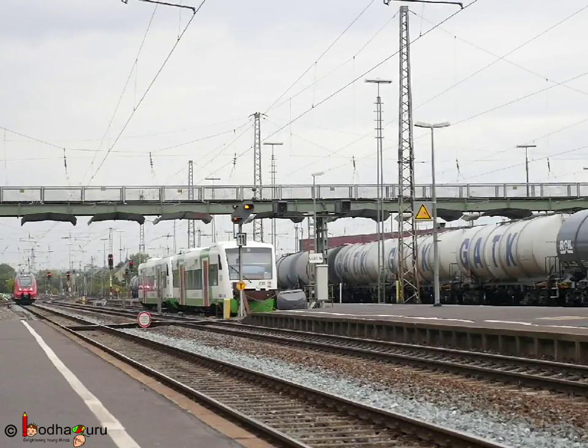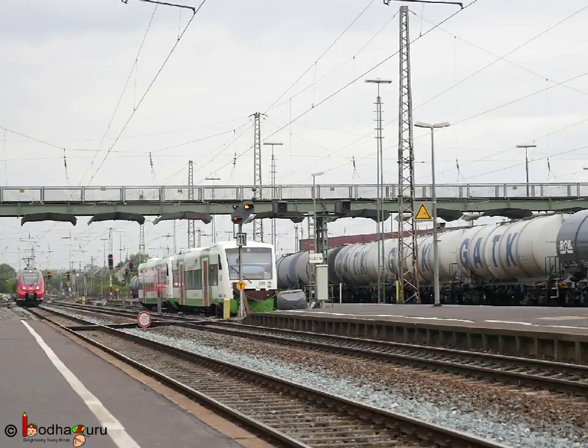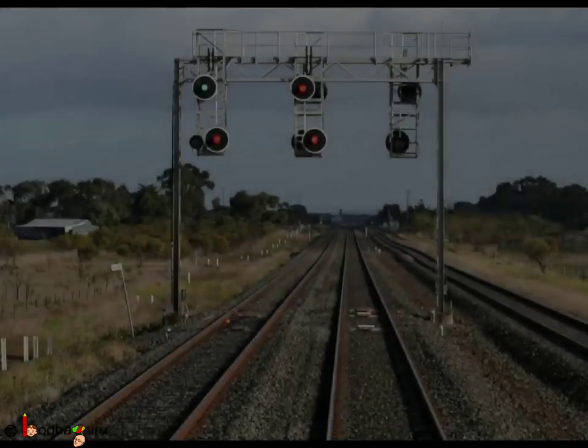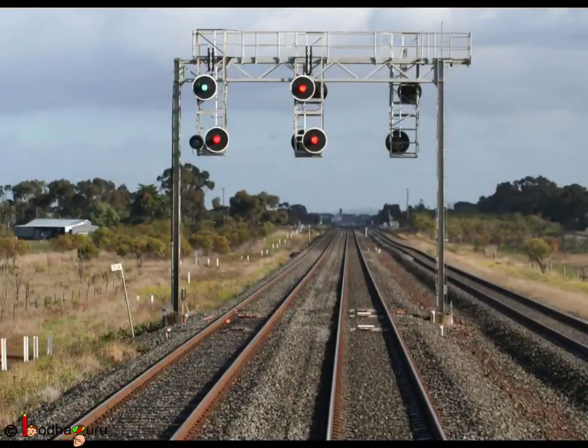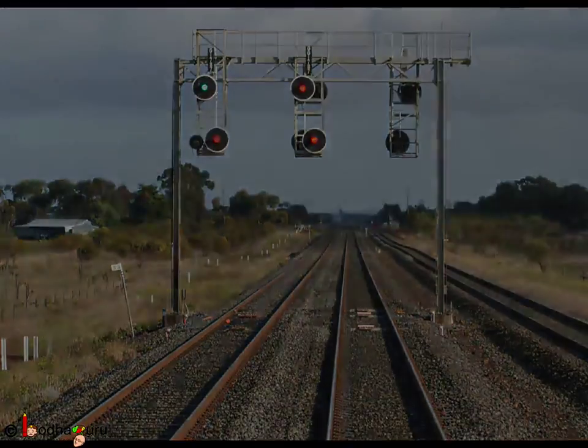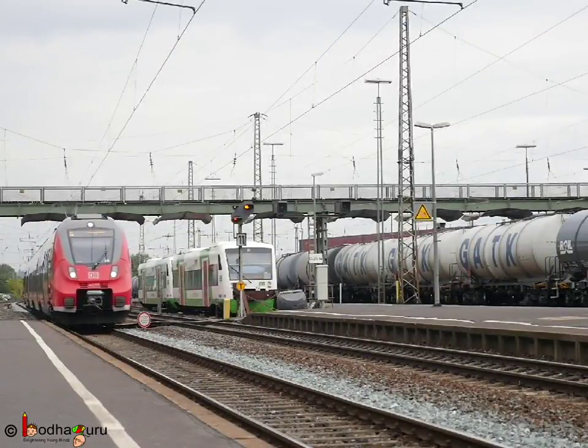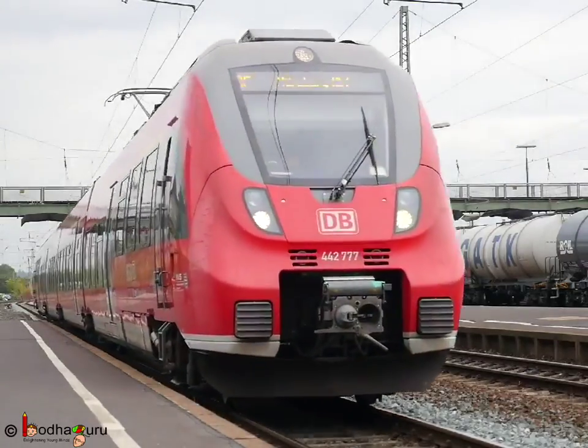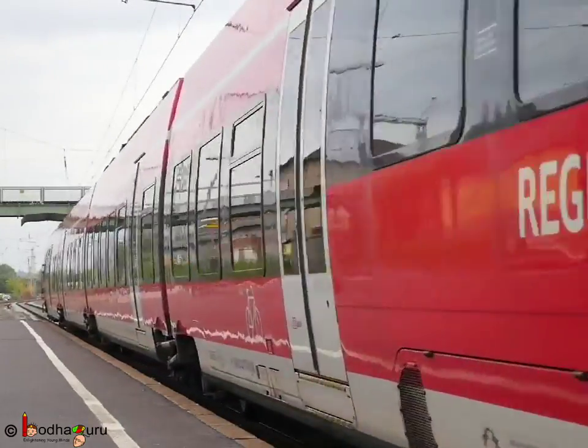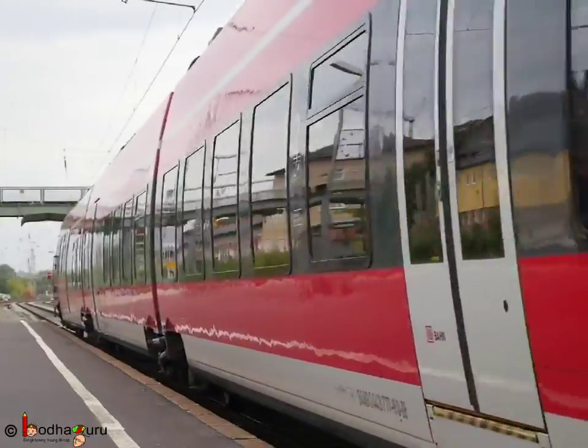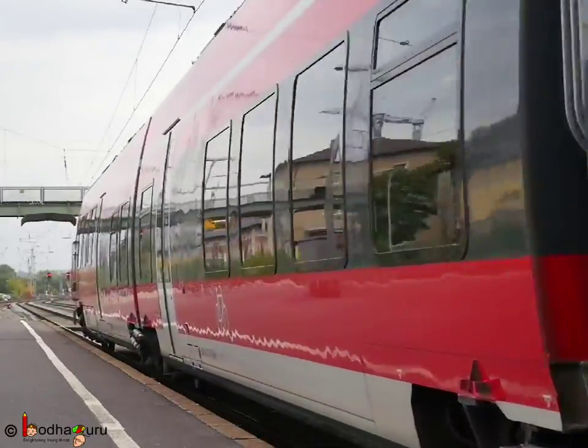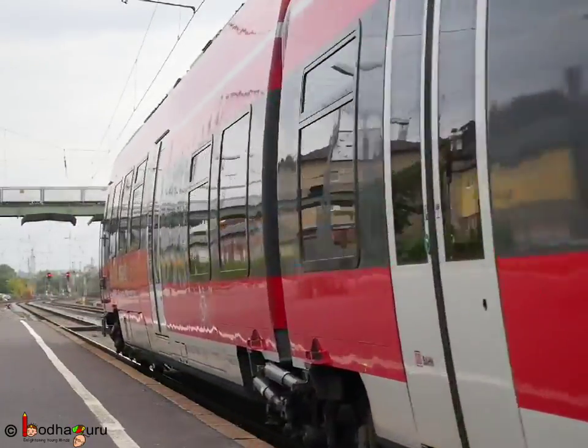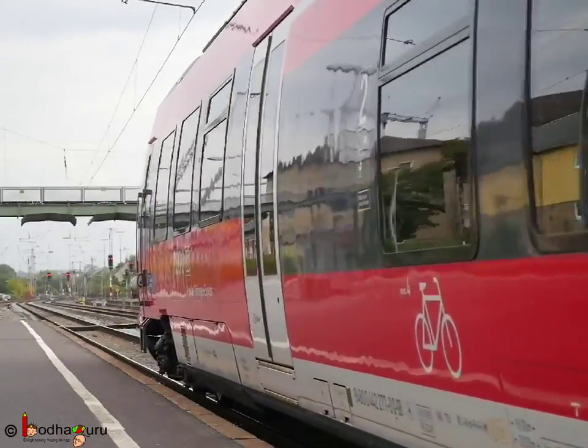Say a train was running at 54 km per hour. The driver saw a red signal 300 meters away and applied the brake immediately. How long will it take for the train to stop? Can it stop before the signal on time if it de-accelerates at 0.5 meter per second square rate?